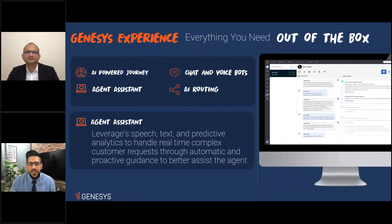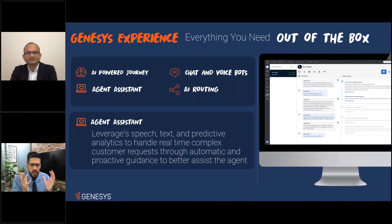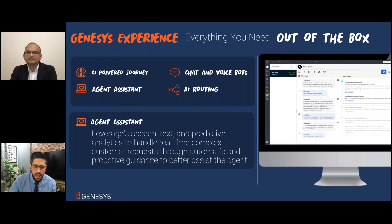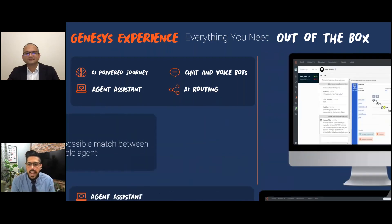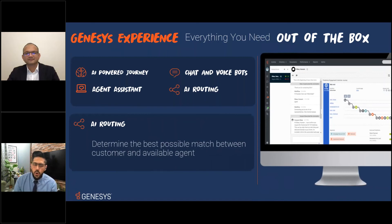Agent Assistant works while the customer is engaging with the agent. The system understands the text of the conversation in real time and proposes relevant topics to the agent. This decreases the time the agent needs to engage with the customer by surfacing topics automatically, so agents don't have to go searching for information manually during the interaction.